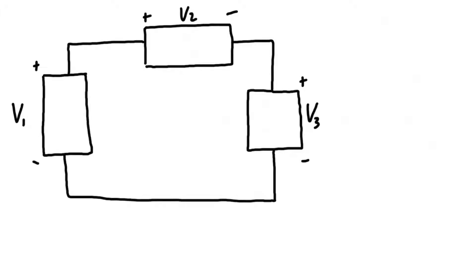The convention is to go clockwise around a loop, but it doesn't really matter as long as you're consistent. All you have to do is when you're going around the loop, if you enter the positive terminal then you treat it as a positive, and if you enter the negative terminal you treat it as a negative in the summation. So basically we would have negative v1 plus v2 plus v3 all has to equal zero.